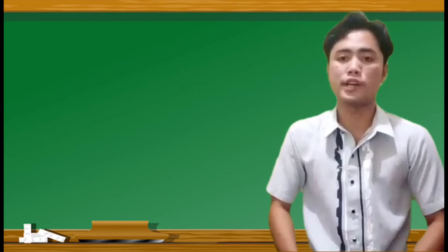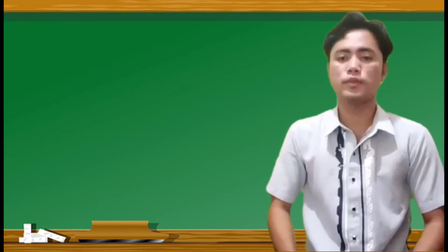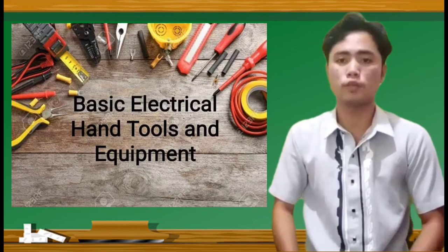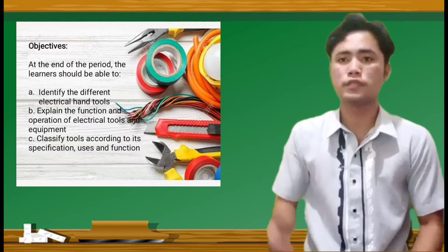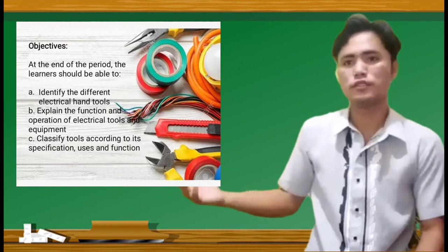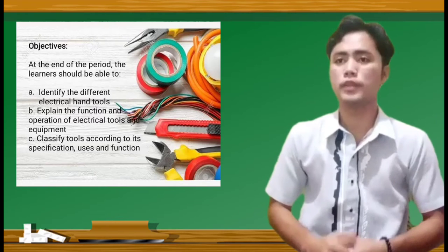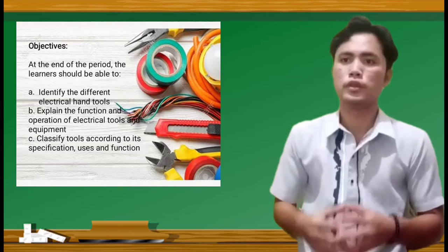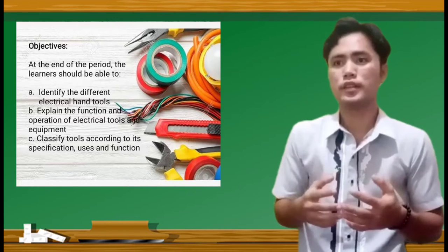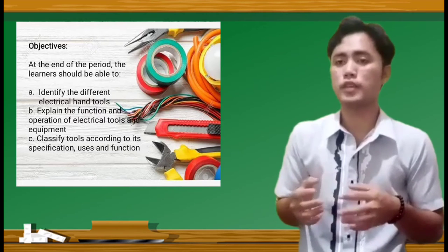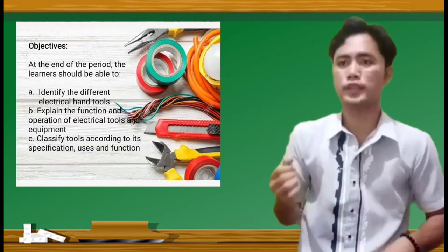So let us now proceed to our lesson today. Our topic for today is all about basic electrical hand tools and equipment. Let us first read the objectives of the lesson. Our objective: at the end of the period, the learners should be able to A) identify the different electrical hand tools, B) explain the function and operation of electrical tools and equipment, C) classify tools according to its specification, uses, and function.